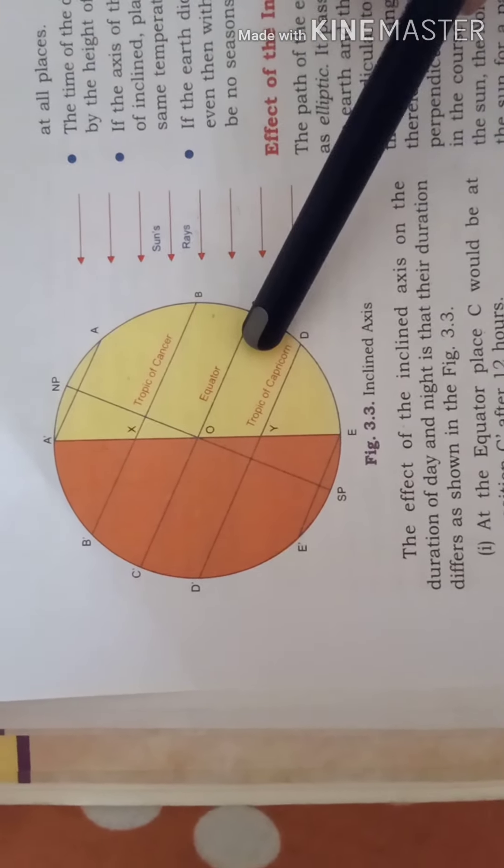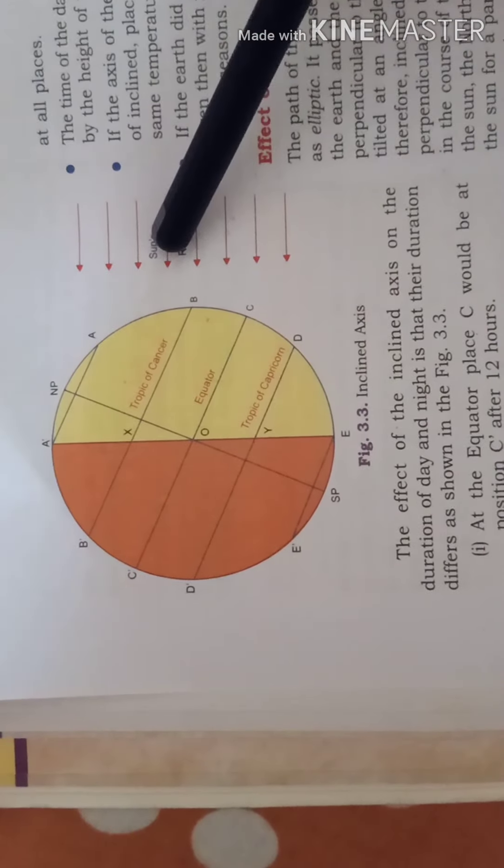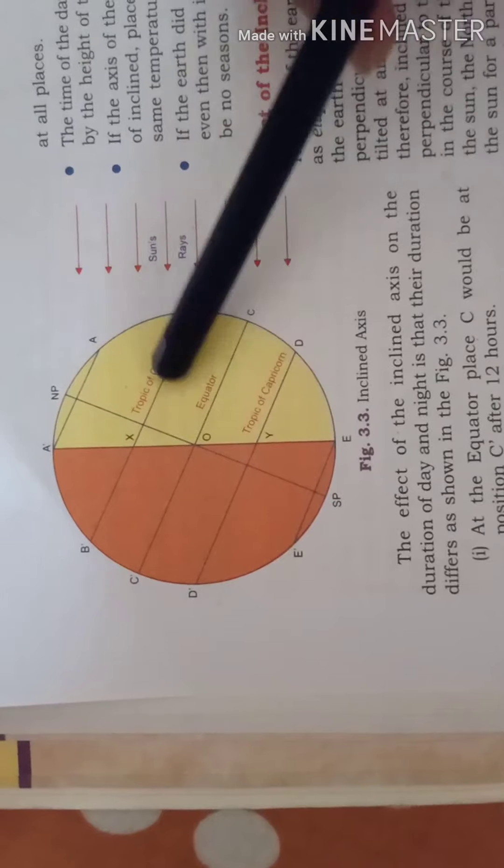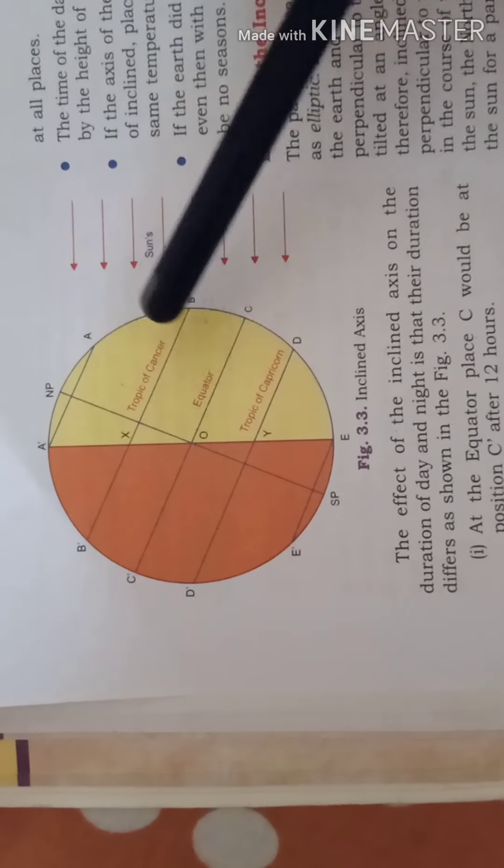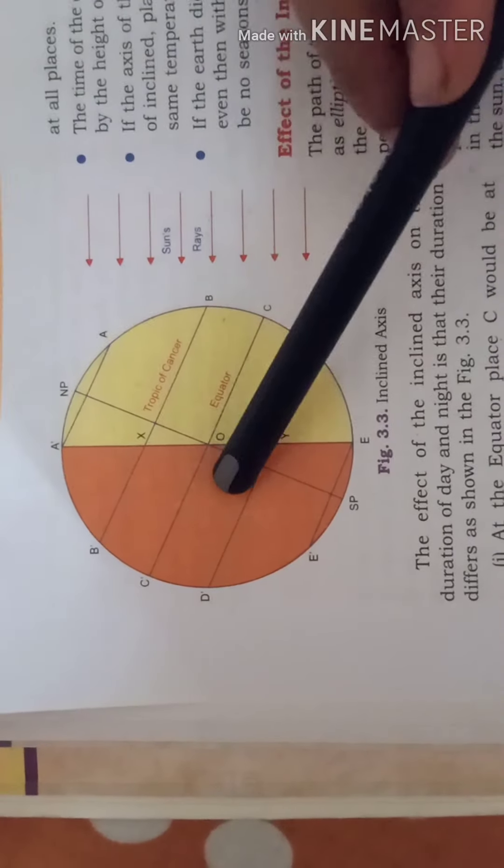Actually to make things clear here in this diagram you can see this part of the earth is facing the sun. So it is experiencing total light and this part is facing away from the sun so it has darkness.